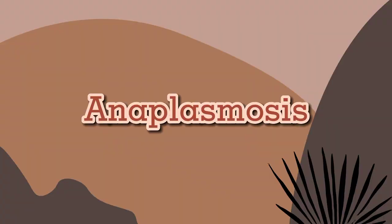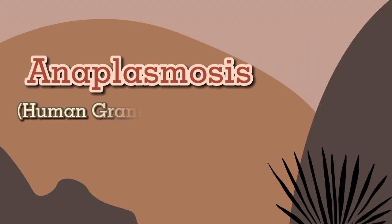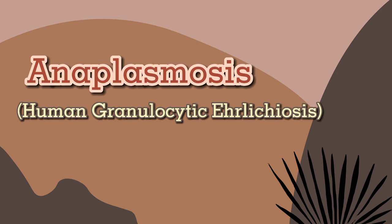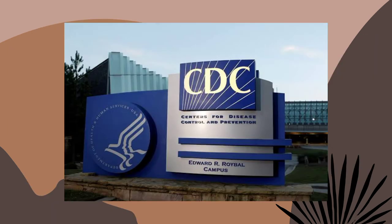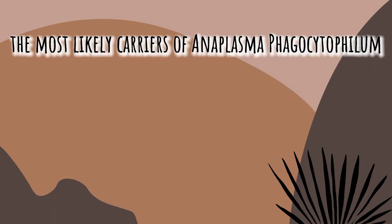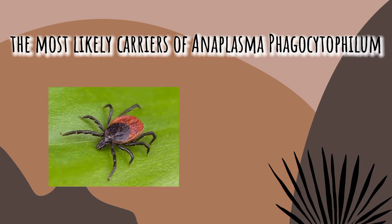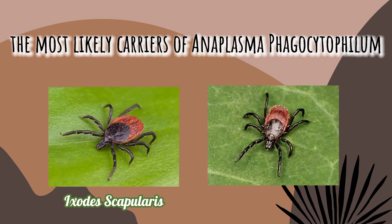Anaplasmosis, which was previously known as human granulocytic ehrlichiosis, is a tick-borne bacterial infection caused by Anaplasma phagocytophilum. According to the Centers for Disease Control and Prevention, the most likely carriers are the black-legged tick or Ixodes scapularis, and the western black-legged tick or Ixodes pacificus.